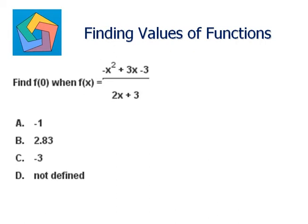Next problem: find f of 0 when f(x) is negative x squared plus 3x minus 3, all over 2x plus 3.